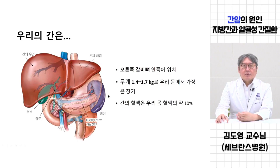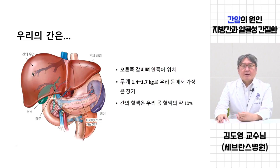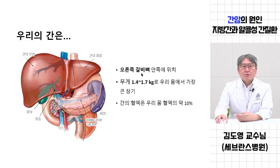우리 간은 오른쪽 윗배에 있죠. 갈비뼈에 의해서 보호되고 있습니다. 그래서 평상시에는 잘 만져지지 않고요. 술을 너무 많이 드셔서 간에 기름이 끼어서 간이 커진다든지 간에 혹이 생긴다든지 하면 갈비뼈 아래쪽으로 간이 만져지는 경우가 있지만, 평상시에 건강한 간은 갈비뼈로 완전히 둘러싸여 있기 때문에 만져지지 않습니다. 그래서 갈비뼈 안쪽에 위치해 있고, 오른쪽 간, 왼쪽 간 이렇게 구분해서 얘기하긴 하지만 두 개가 붙어있는 거죠.